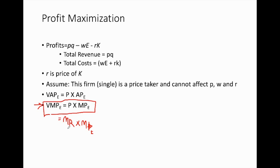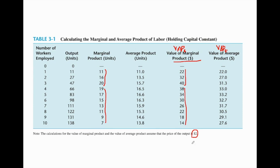In a competitive product market, marginal revenue equals the price given by the market — the firm is a price taker. So we replace marginal revenue with P. Knowing the product price equals $2, we derive the value of marginal product of worker as $2 times the marginal product of worker: 2 × 11 = 22, 2 × 16 = 32, and so on. This is how we derive the VMP of worker.